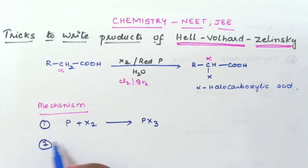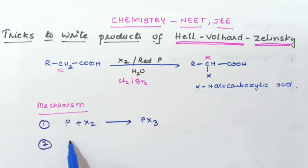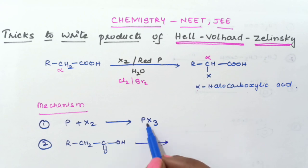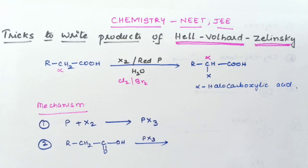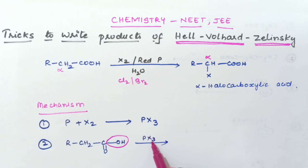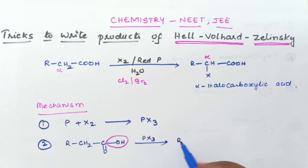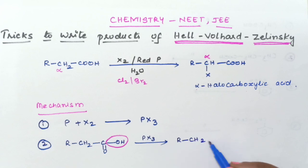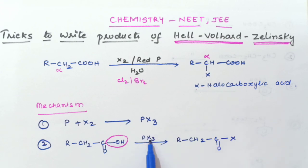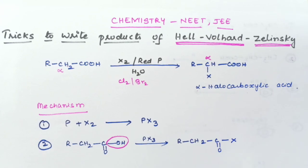In the second step, the acid (RCH₂COOH) reacts with PX₃. The OH group of the carboxylic acid is replaced by one halogen from PX₃, giving the acyl halide intermediate: RCH₂C(=O)X.